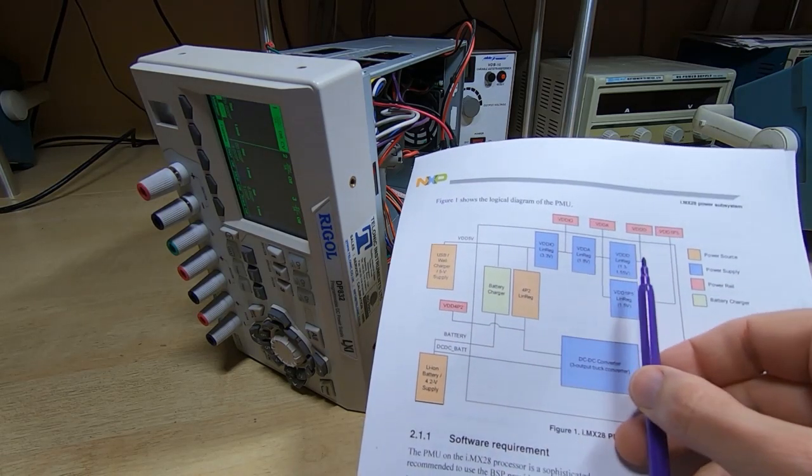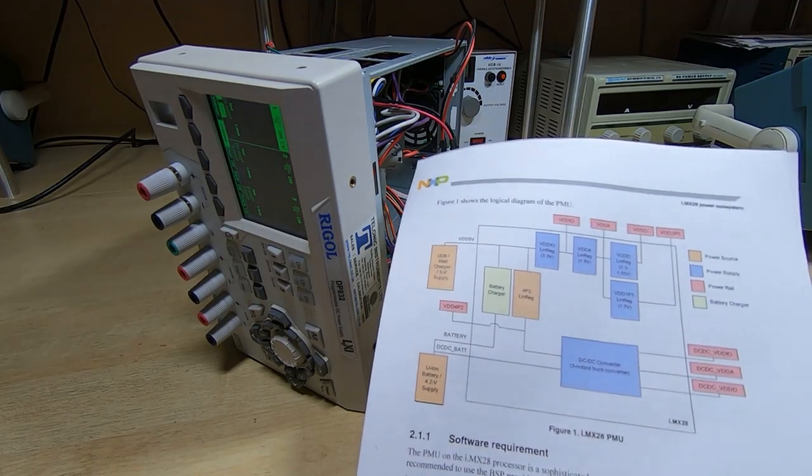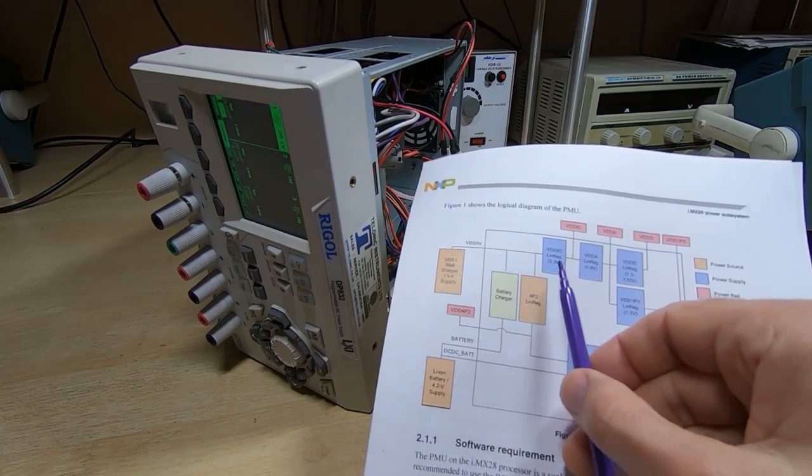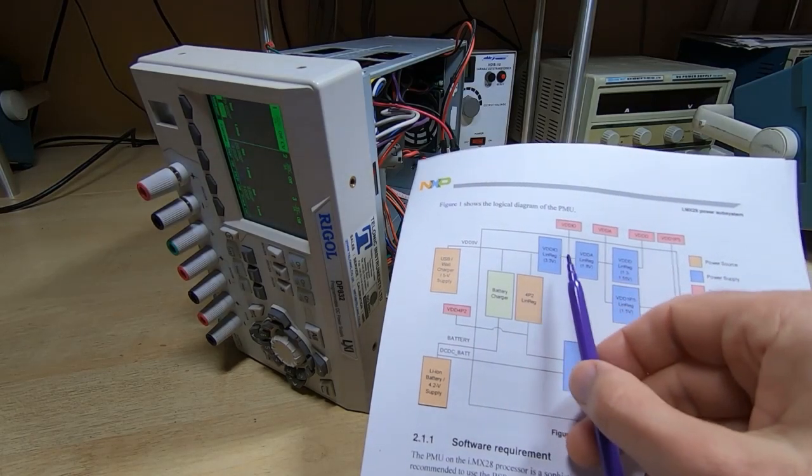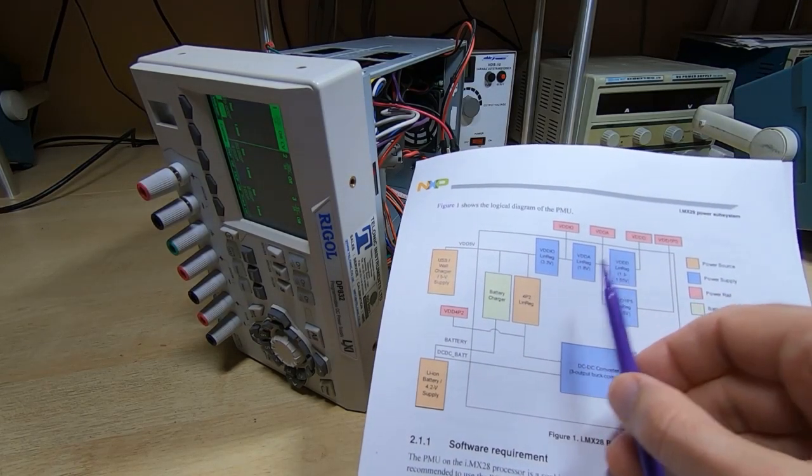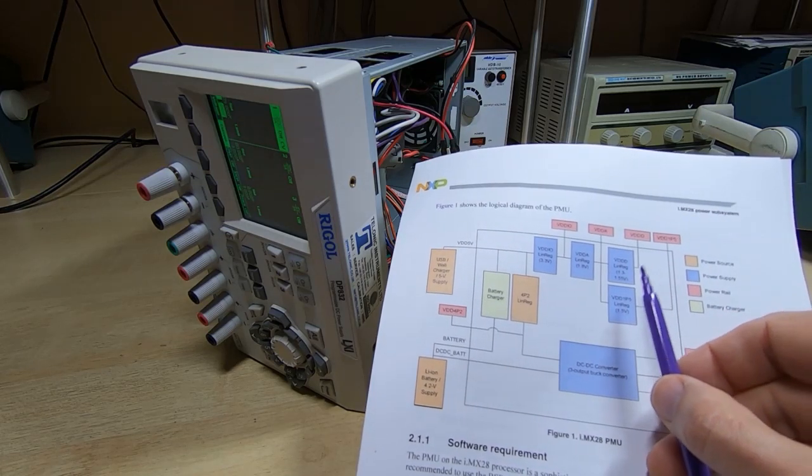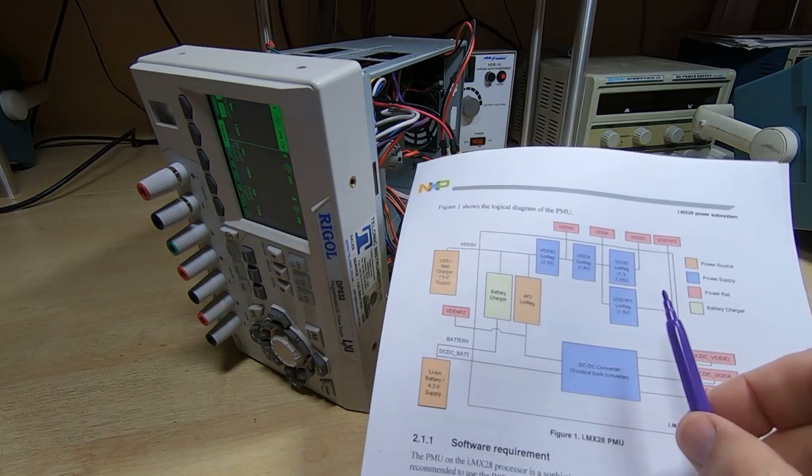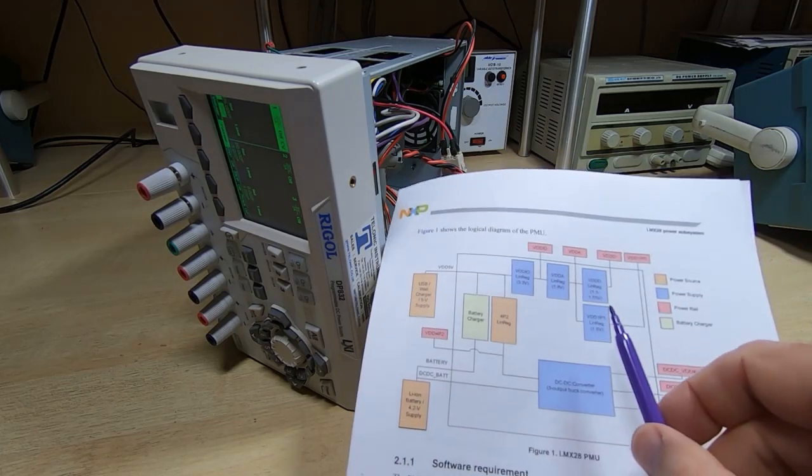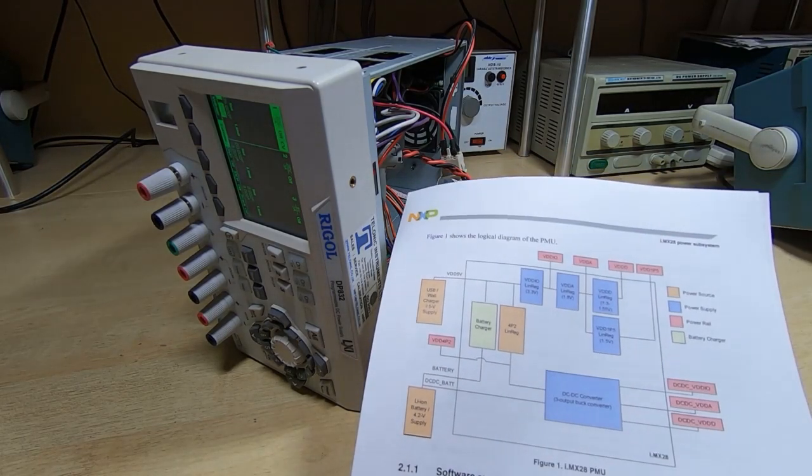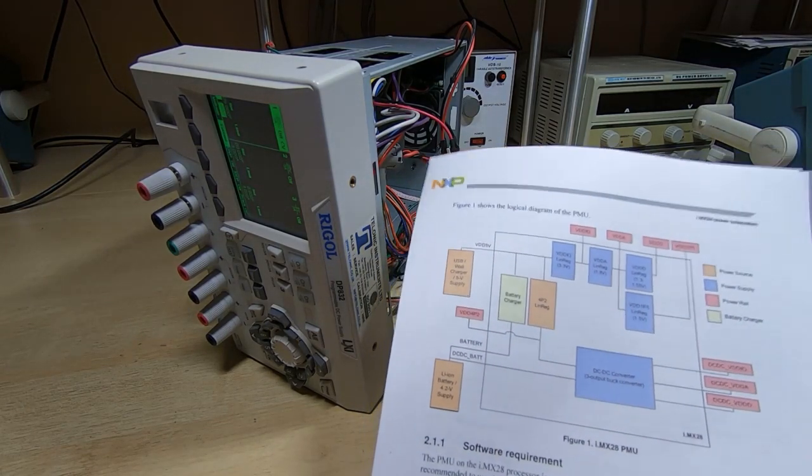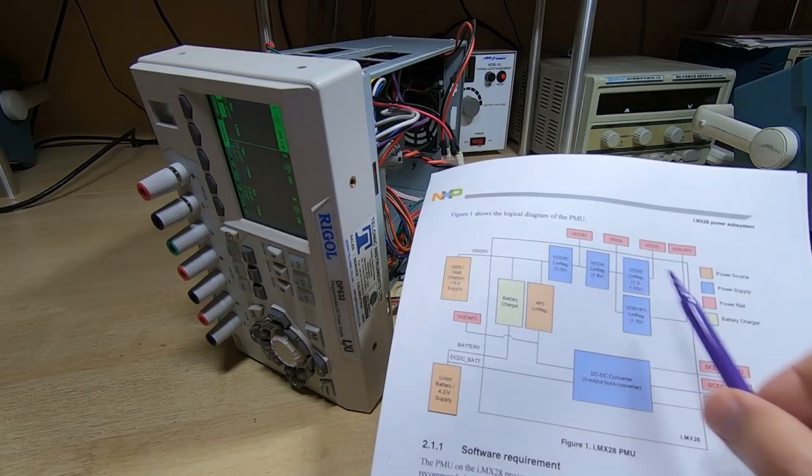There's quite a few rails on this device going from 3.3 volts, which these are adjustable by the way, 3.3, 1.8 and 1.55 volts, and then there's a secondary 1.5 volts. These are used internally in the device as well as externally for various peripherals, but this is not really how it works.